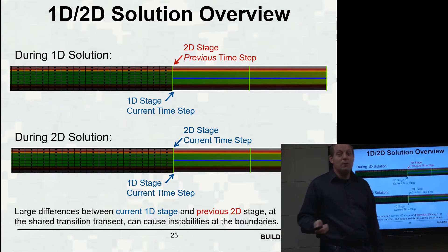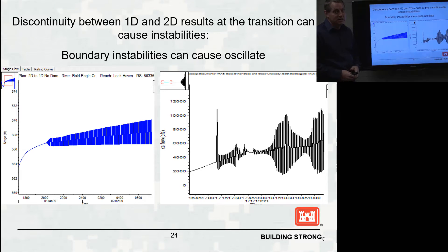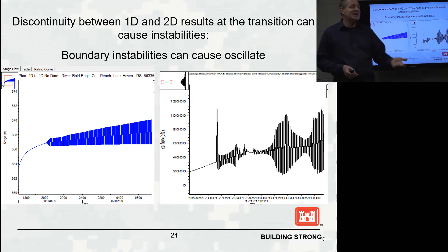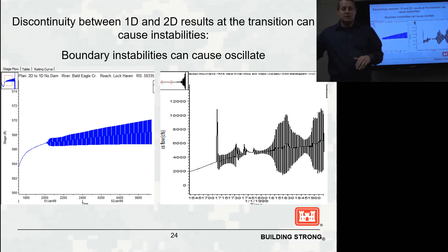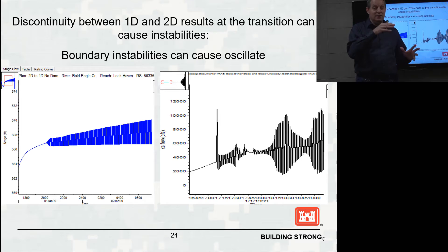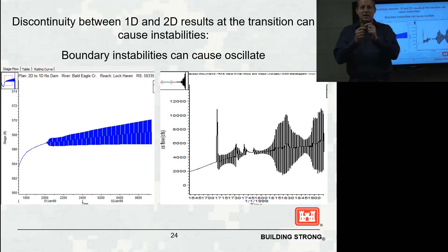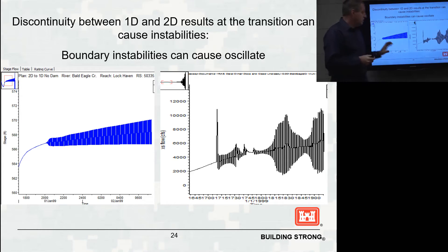You get classic oscillating instabilities in your hydrograph plot — the kind you might see with submerged lateral flow modeling or certain sediment cases. In one time step the forcing goes one way, then the next time step tries to overcompensate, going the other way, producing oscillations. The 1D and 2D stages are out of sync, and in alternating time steps they try to resolve. Instead of converging, they can diverge and fail your model.